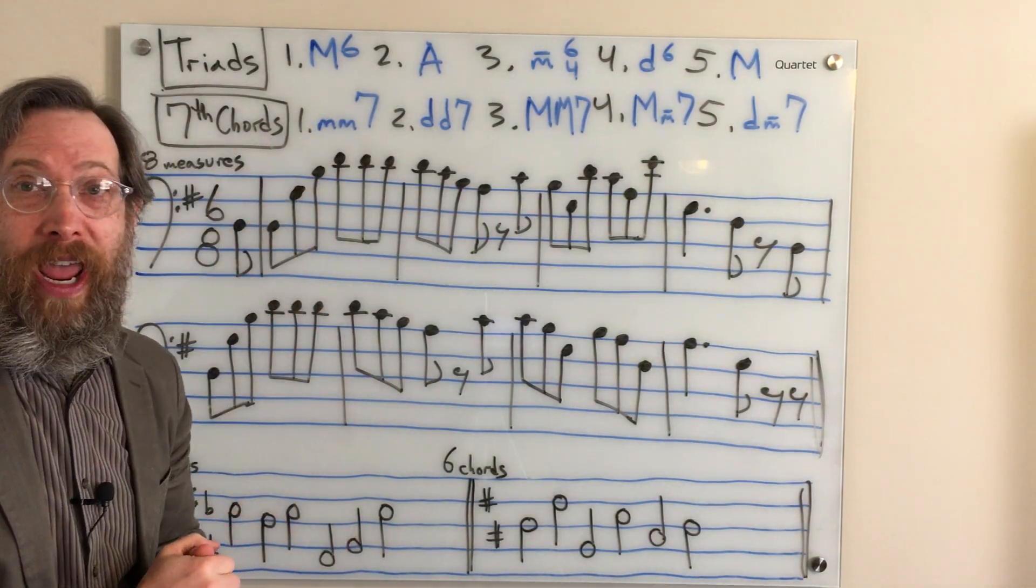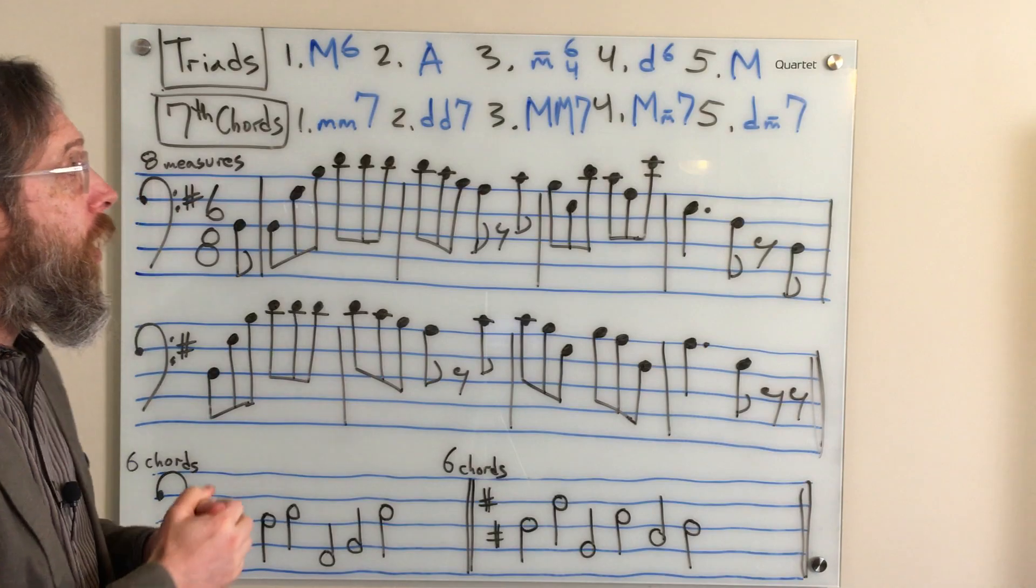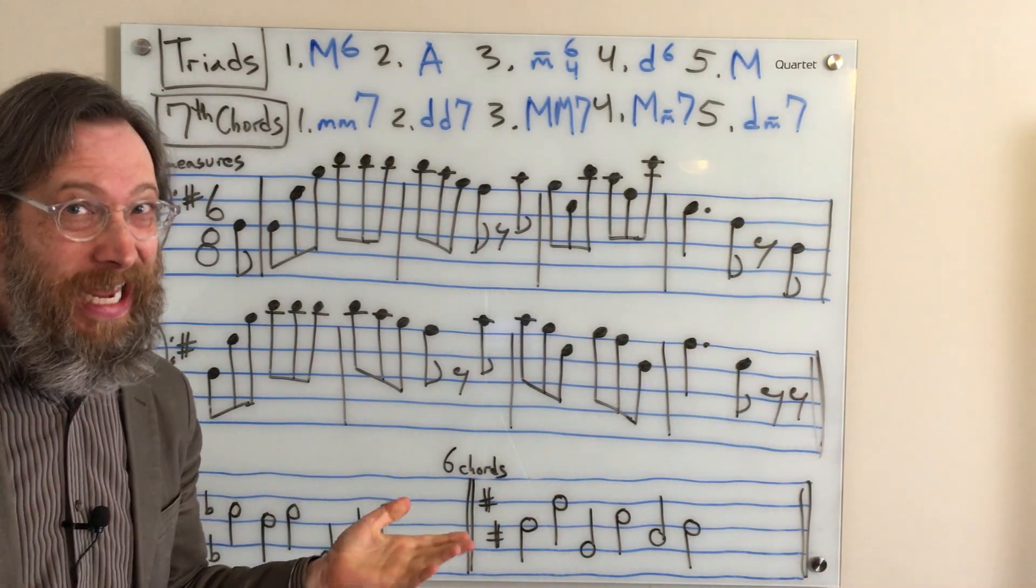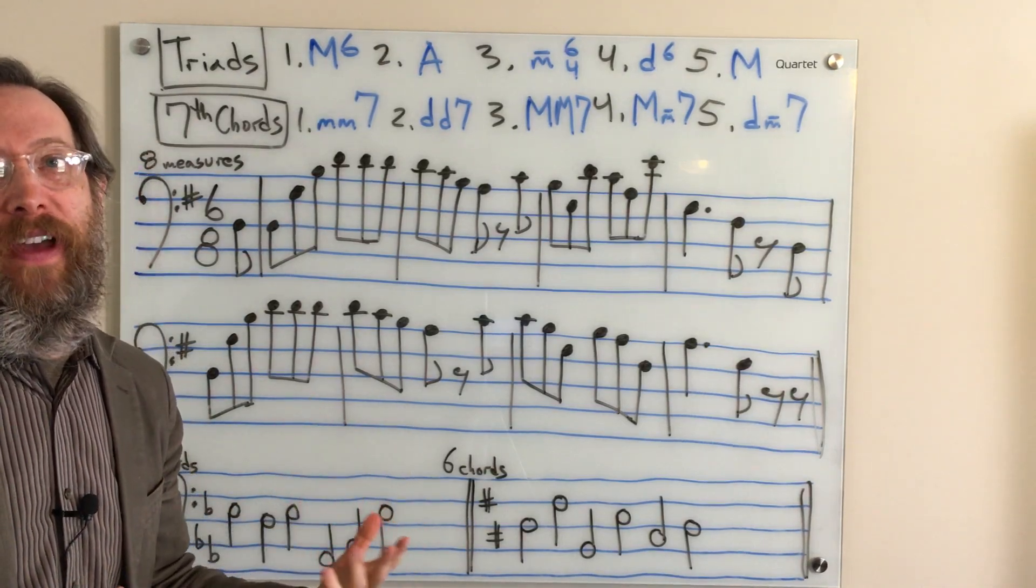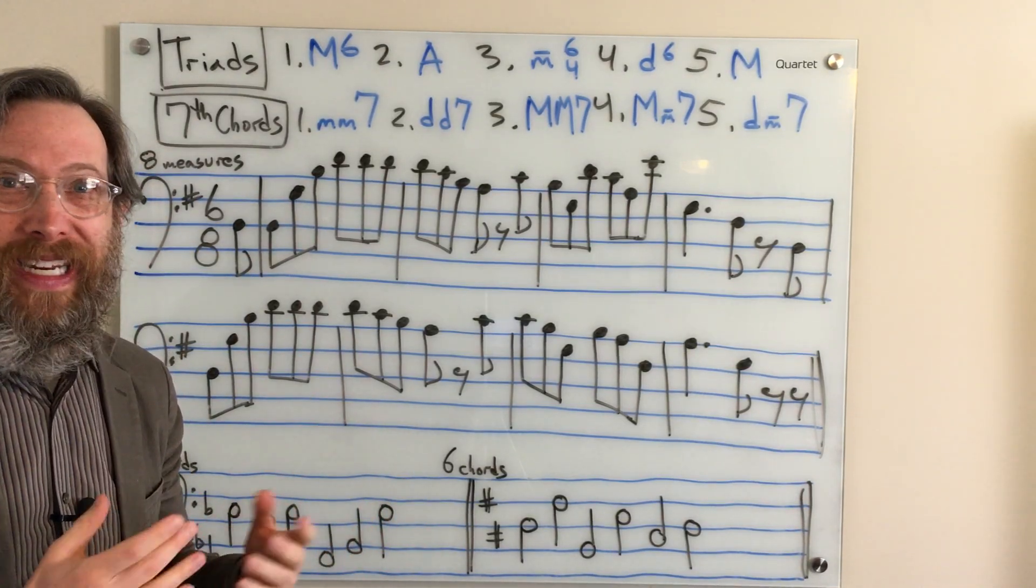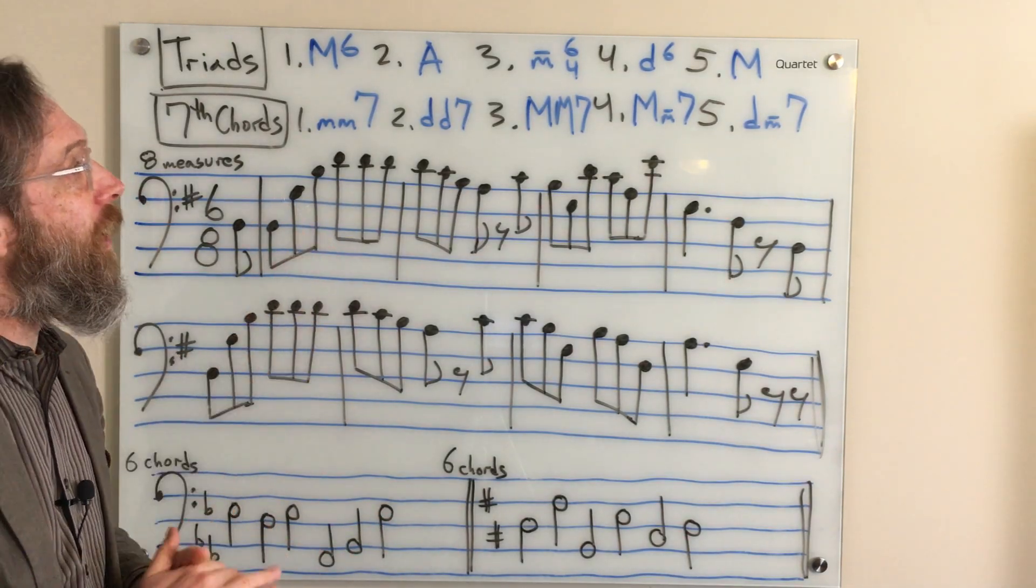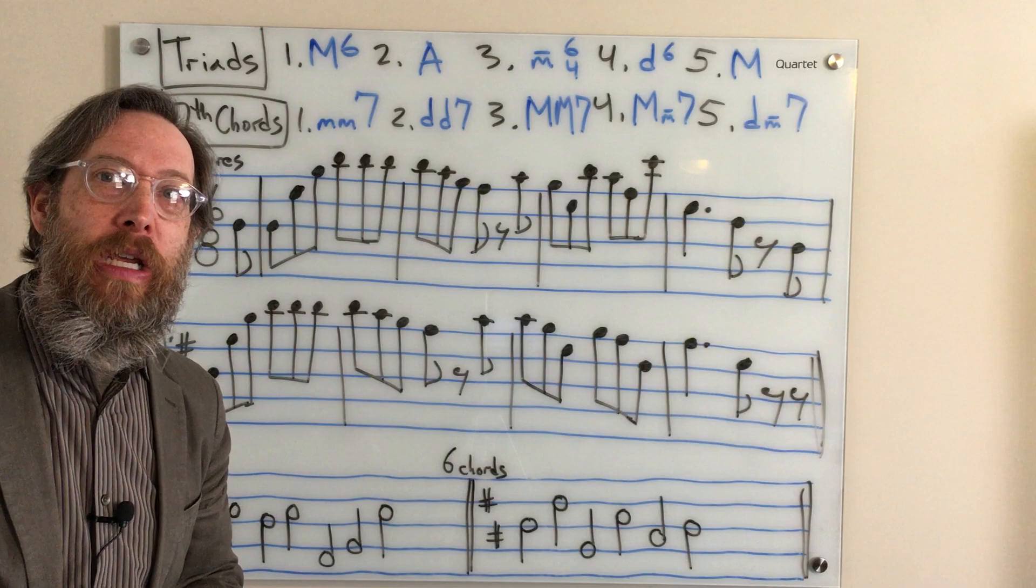Number three is a minor triad in second inversion. Number four is a diminished triad in first inversion. And as a hint, diminished triads are almost always found in first inversion. So when in doubt, guess first inversion. And finally, number five was a major triad in root position.